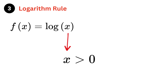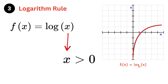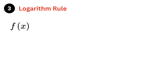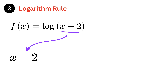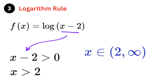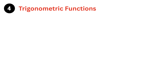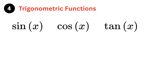Next is the logarithm rule. If a function contains a logarithm, the input of the log must be strictly greater than zero, because the log of zero or a negative number does not exist in real numbers. For example, f(x) = log(x minus 2): we need x minus 2 > 0, so adding 2 to both sides gives x > 2. Therefore the domain is from 2 to positive infinity.